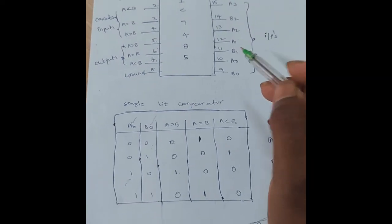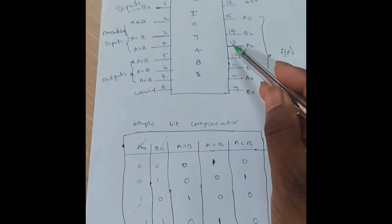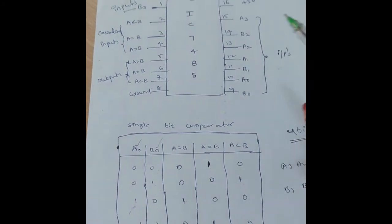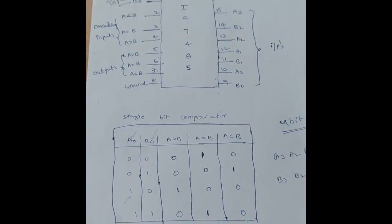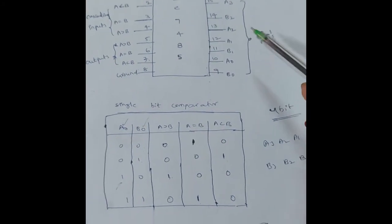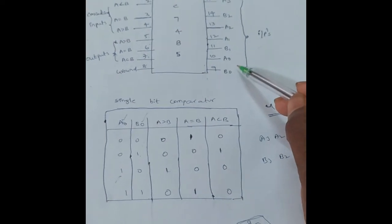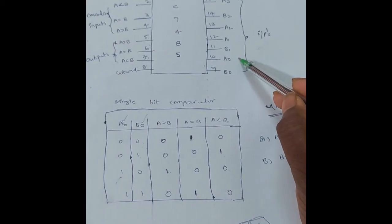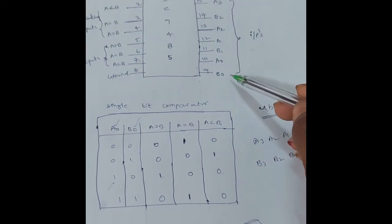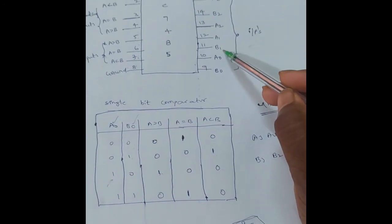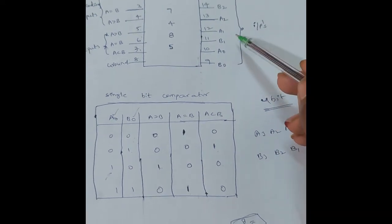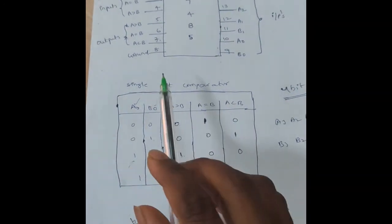Using IC 7485, we can perform a 1-bit comparator, 2-bit comparator, and 4-bit comparator. For a 1-bit comparator, we take B0 and A0 as inputs. For a 2-bit comparator, we take B0, B1, A0, and A1 as inputs. This is the function table of the single-bit comparator.